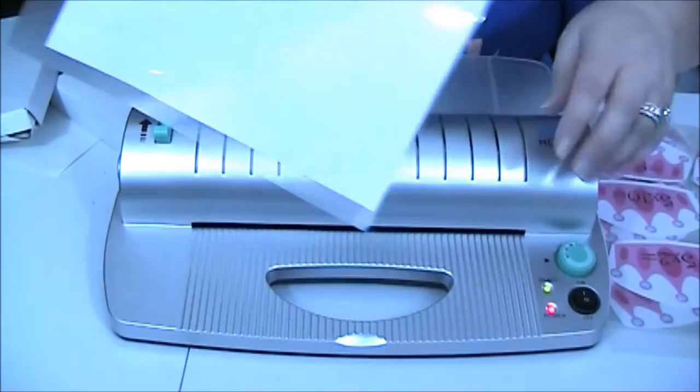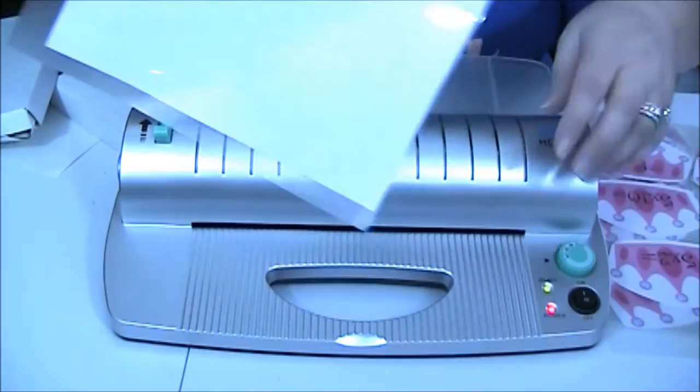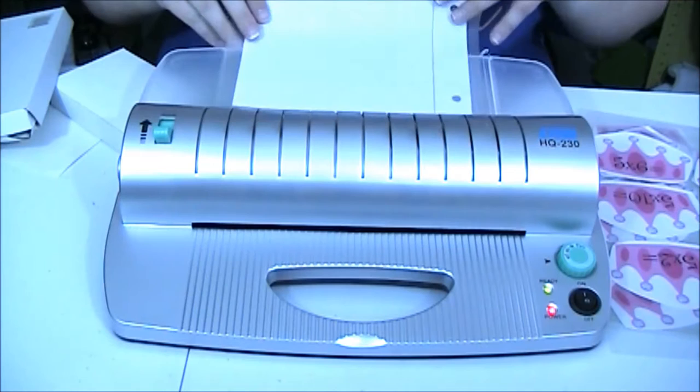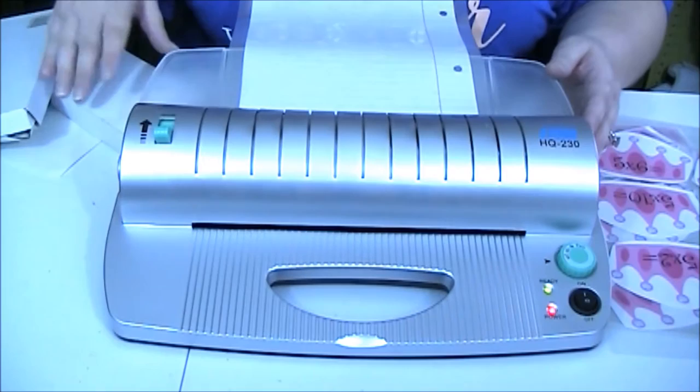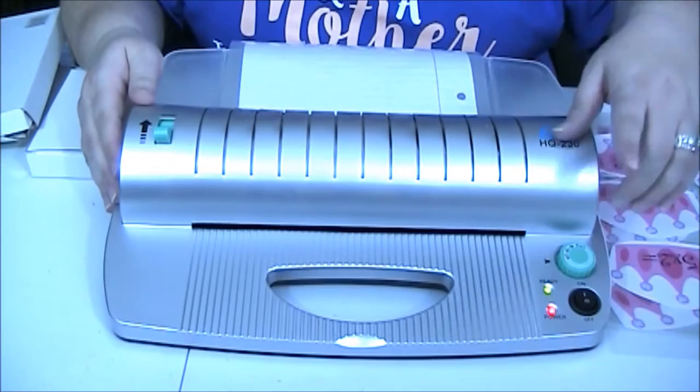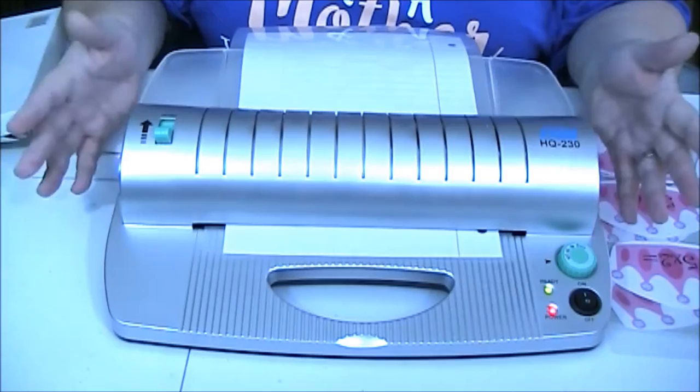And then you lay it flat. And then now that it is ready you're going to put it crease side first in through the laminator. And you're going to want to run it through at least twice. Sometimes I run it through three times depending on how it looks. So I have it set all the way at the highest setting which is 125 and it just slowly pulls itself through.